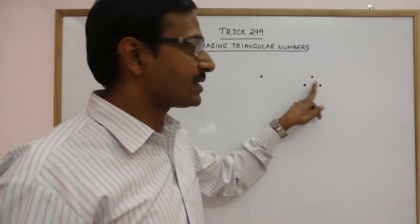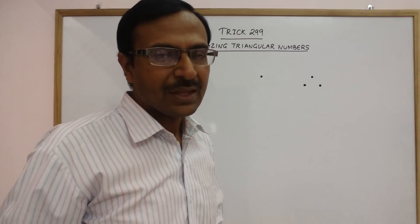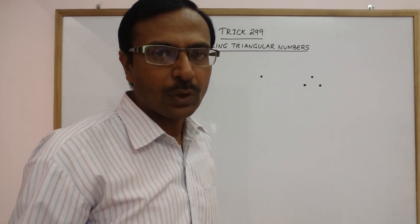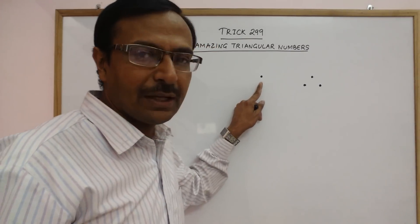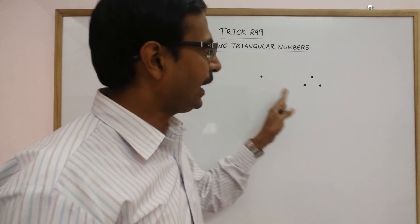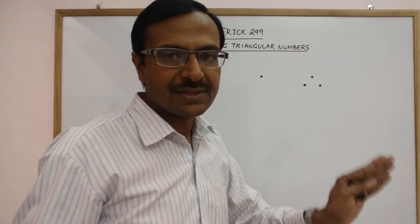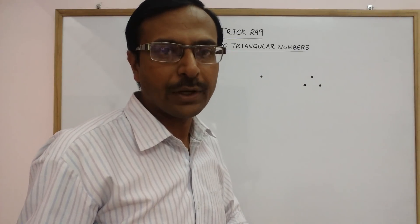Therefore, the number of dots 3, the number 3 is known as a triangular number. By default, number 1 is also known as a triangular number and now we can carry on this sequence to obtain more triangular numbers.